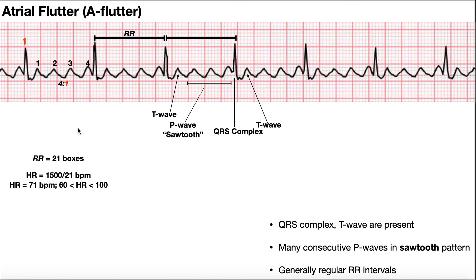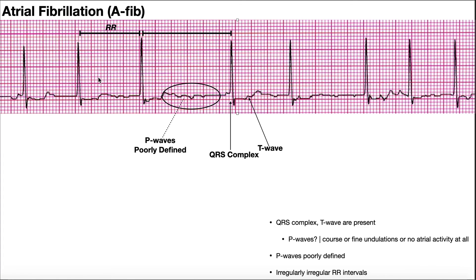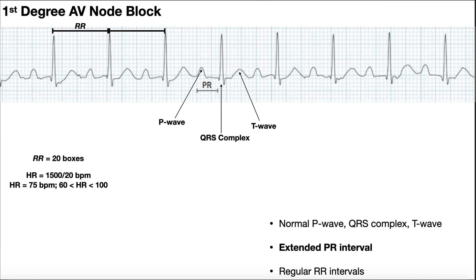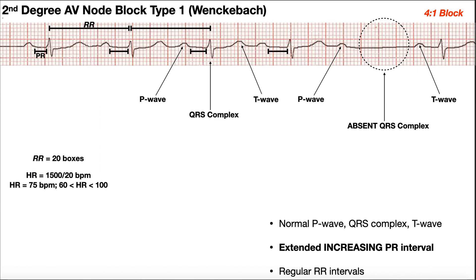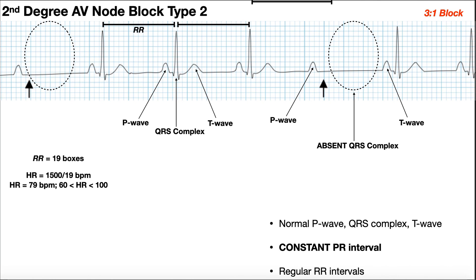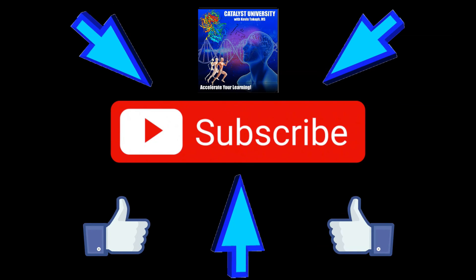We'll see some other things later on where we can do similar things. Hopefully this video gave you a good understanding about how to identify atrial flutter and atrial fibrillation on an EKG. In the next video, we're going to be dissecting the AV node blocks — we're going to see a first degree AV node block and a second degree and both types of that. So join us then. Please make sure to like this video and subscribe to my channel for future videos and notifications. Thank you.